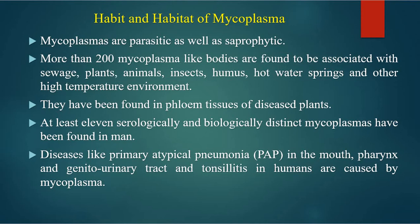Mycoplasma-like organisms have been found in the phloem tissue of diseased plants. At least 11 serologically and biologically distinct mycoplasmas have been found in humans. Diseases like primary atypical pneumonia in the mouth, pharynx, and genitourinary tract, and tonsillitis, are caused by mycoplasma.